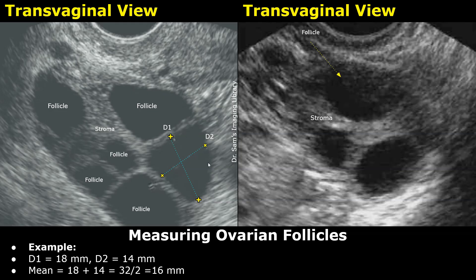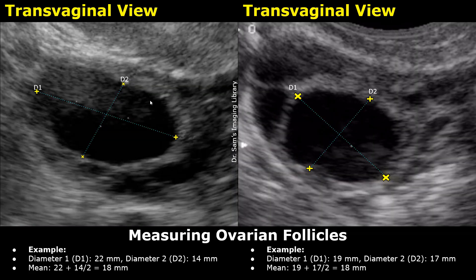After measuring this follicle, you can measure the other follicles one by one in a similar manner. Our next example shows a dominant follicle with D1 measuring 22 millimeters and D2 measuring 14 millimeters. The mean diameter is (22 + 14) / 2 = 36 / 2 = 18 millimeters.